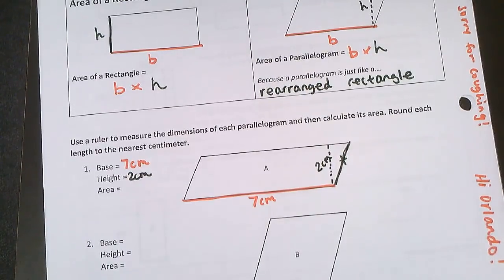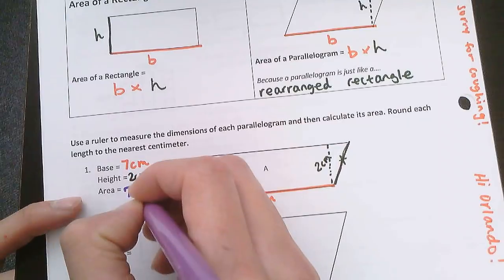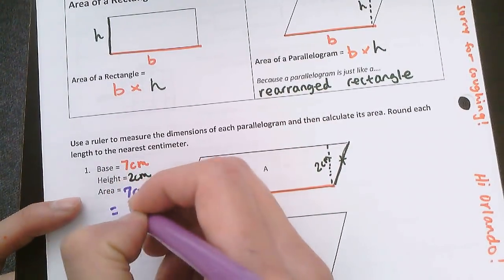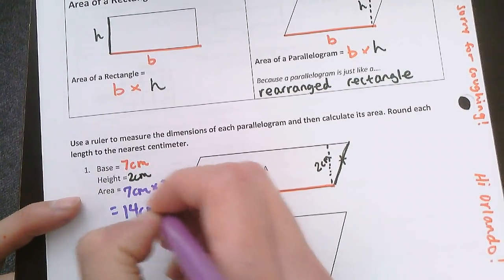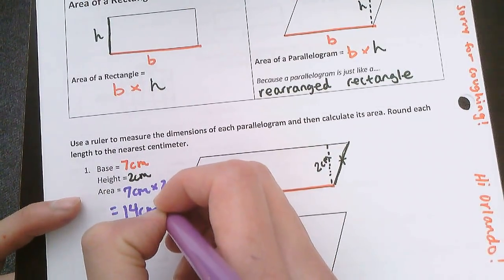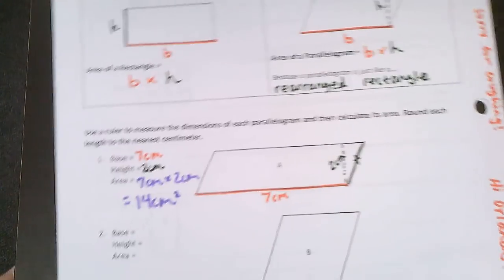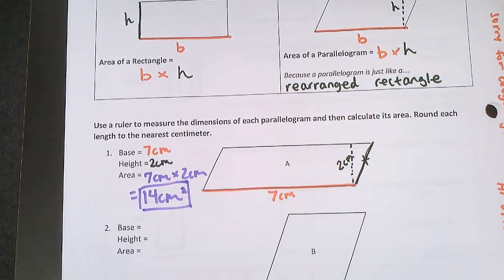The area is the base times the height. So it's just seven centimeters times two centimeters. Seven times two is 14, centimeters times centimeters is centimeters squared. So 14 centimeters squared is the area of the parallelogram.